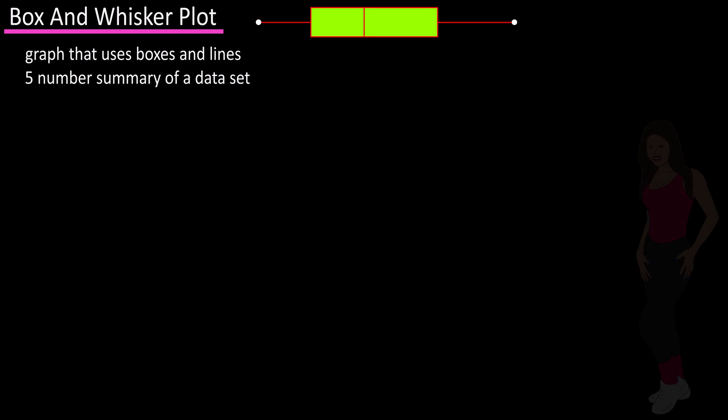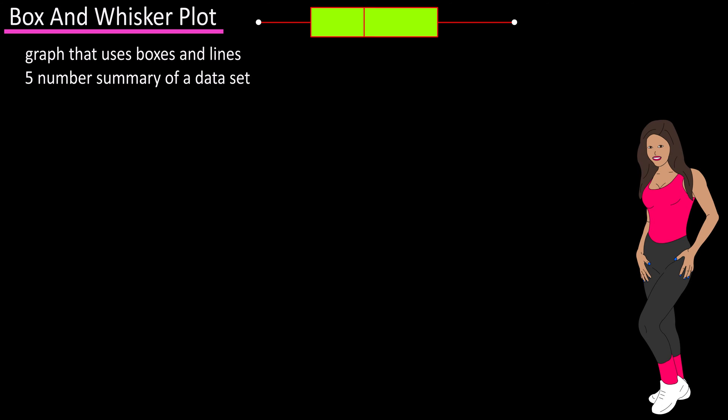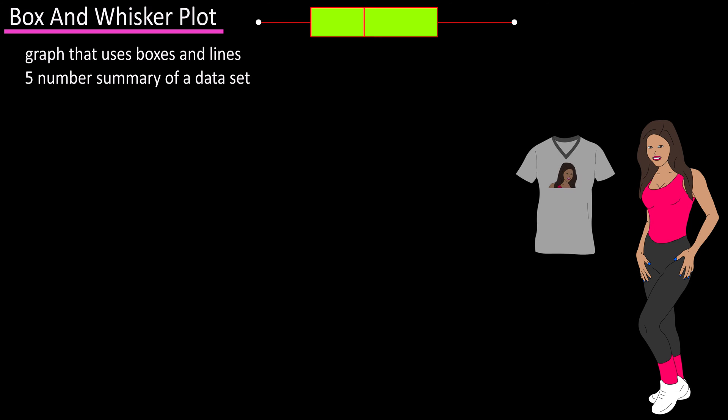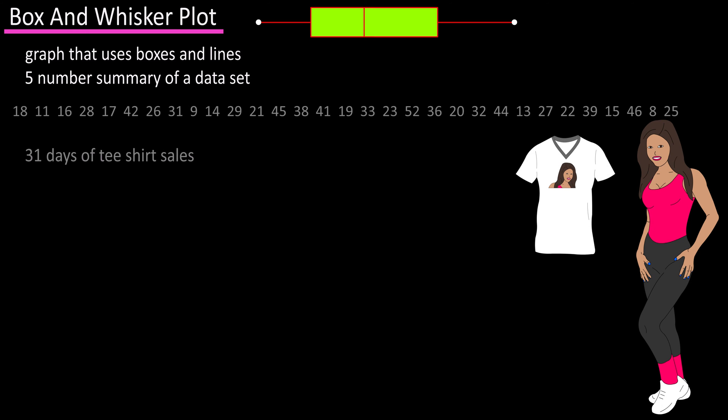Let's say that a rapidly rising Instagram fitness model's daily t-shirt sales for the last 31 days are listed here, and we want to create a box and whisker plot for this data.